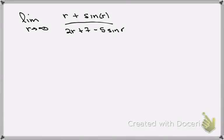When we have a combination of polynomial parts and trig function parts, what we want to do is divide the top and bottom of the fraction by the term that's most affected by r going to infinity.